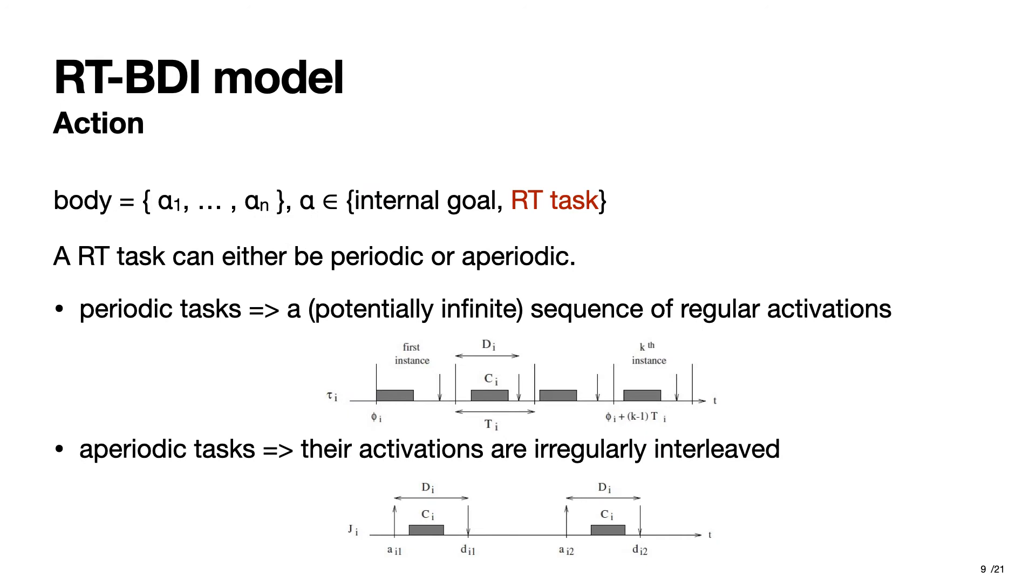and they require the instantiation of one or more sub-plans. Concerning the other kind of actions, the tasks, we have considered two main real-time task models. Inherited from real-time systems, the tasks performed by our agents can be either periodic or aperiodic. Periodic tasks consist of a potentially infinite sequence of regular activations and are characterized mainly by a computational time and a period,